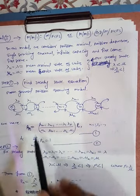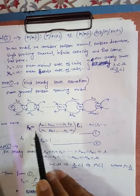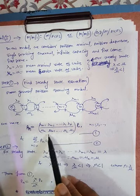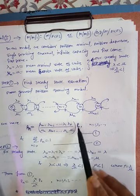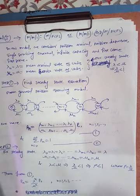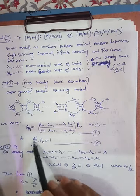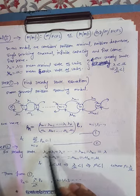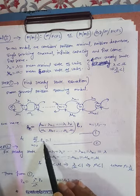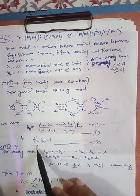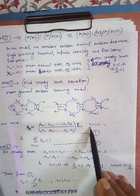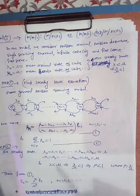We have already discussed this formula in the previous video: Pₙ = (λₙ₋₁ · λₙ₋₂ · ... · λ₁ · λ₀) / (μₙ · μₙ₋₁ · ... · μ₂ · μ₁) × P₀. We also know that the total summation of Pₙ from n=0 to infinity equals 1, since Pₙ represents the probability that the system is in the nth state.